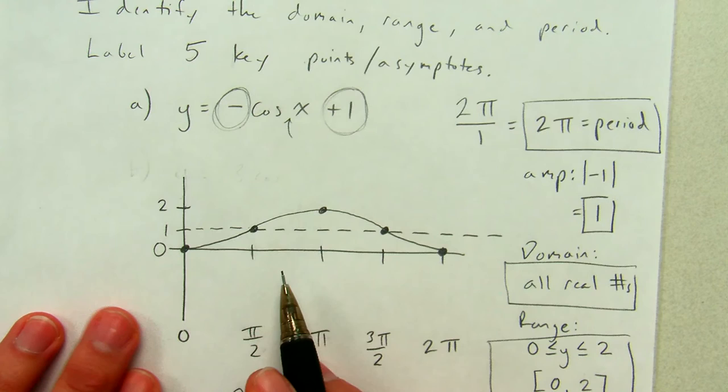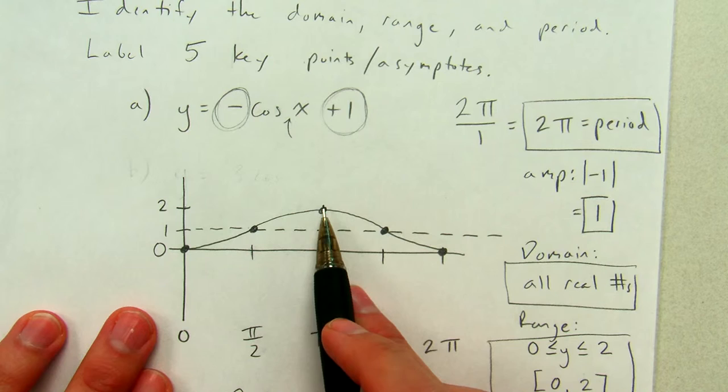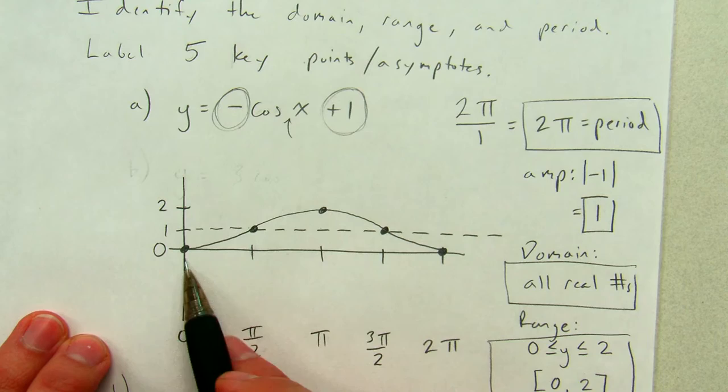Let's see. We've got domain, range, period. What would the maximum value of this graph be? The highest it reaches. The maximum value is 2. What's the minimum value it reaches? 0. I've labeled my five key points and I'm done.